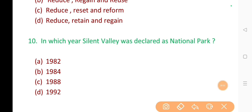10. In which year Silent Valley was declared as national park? The correct answer is option B. 1984.